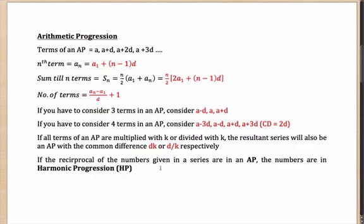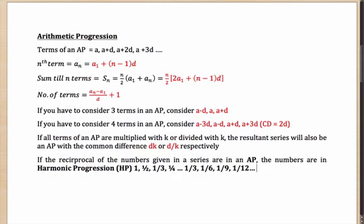If you encounter a harmonic progression, don't be scared — it is very basic. If the reciprocals of the given numbers are in an AP, then the numbers are in a harmonic progression. For example, 1, 1/2, 1/3, 1/4 are in HP because their reciprocals 1, 2, 3, 4 are in AP. Similarly, 1/3, 1/6, 1/9, 1/12 are in HP because their reciprocals 3, 6, 9, 12 are in AP.